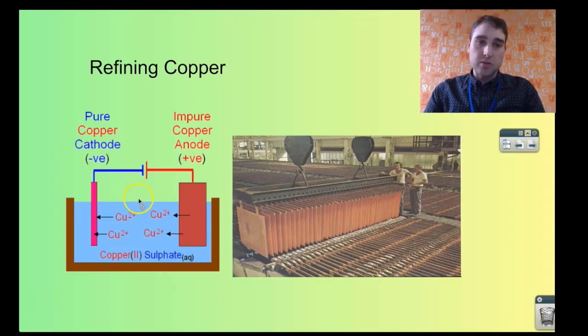The copper ions go into solution and then they are reduced over at the cathode. The copper ions are reduced to pure copper.